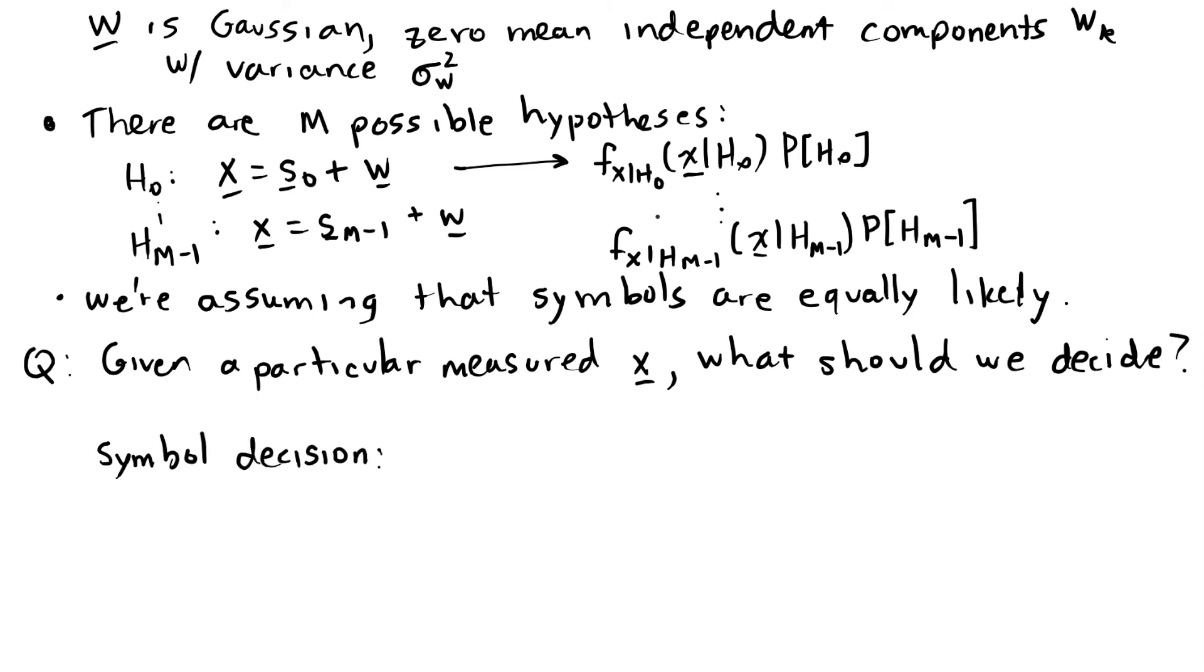To prove this, we would need to put in a probability of symbol error expression, and here, there are capital M minus one ways to make an error, whereas before, there was only one way to make an error for each symbol. Here, there are M minus one ways. There's only one way to make the correct decision. But in order to minimize the probability of error,